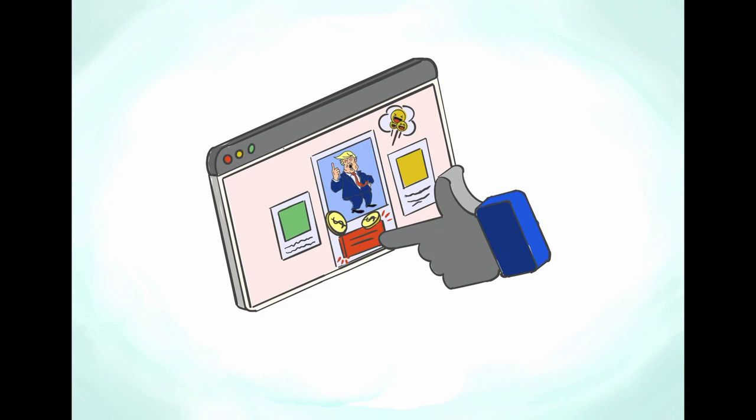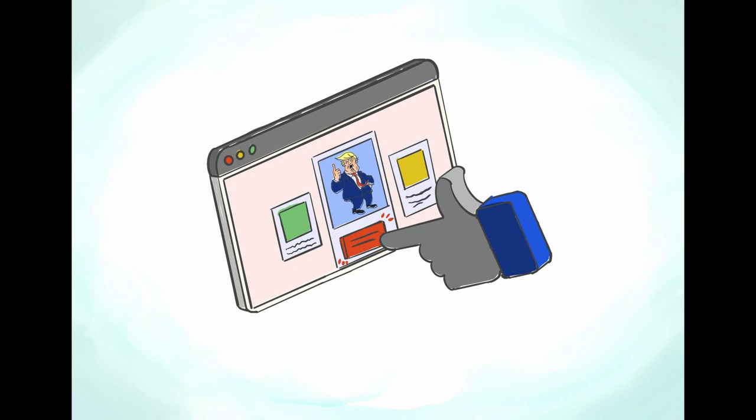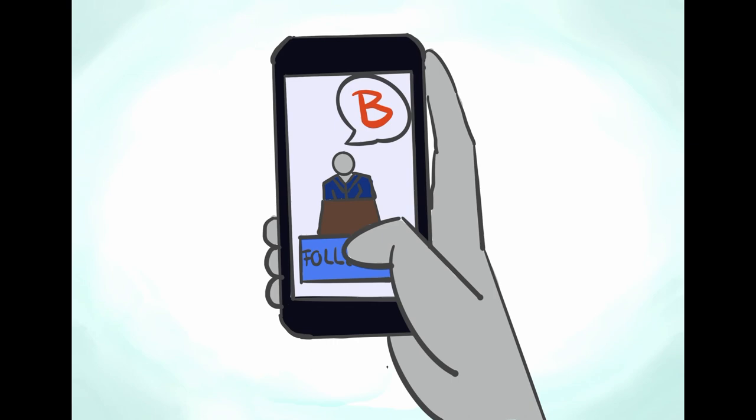Maybe you're asking yourself what can I personally do about all of this? Act consciously in the internet. Every click you give a picture or video or post is like a vote that votes for more content like this. So do not click on clickbaiting or populist posts. Look for diversity yourself. Do not only follow people you agree with also follow people you disagree with so you do not get caught in echo chambers.